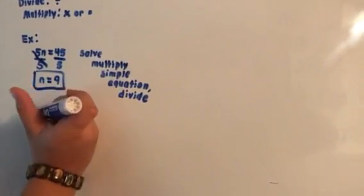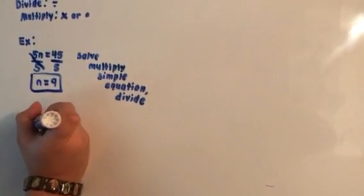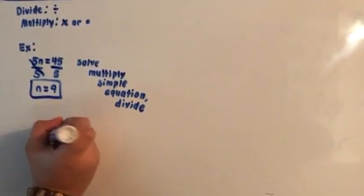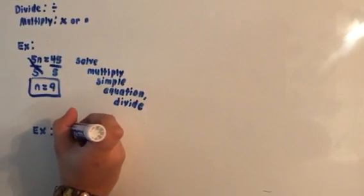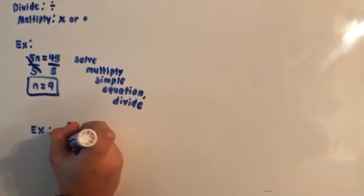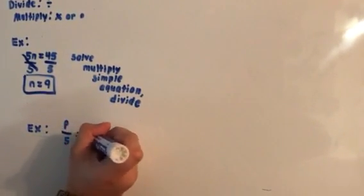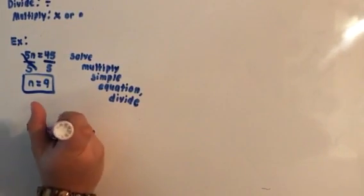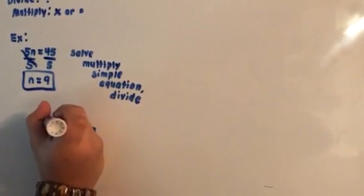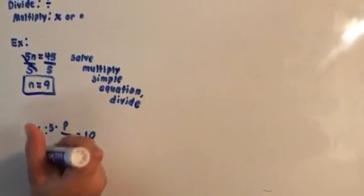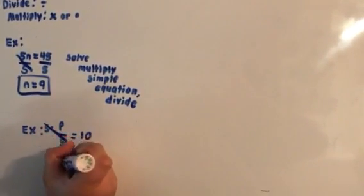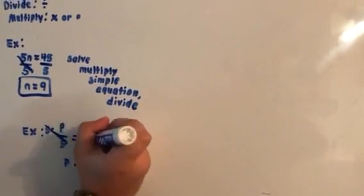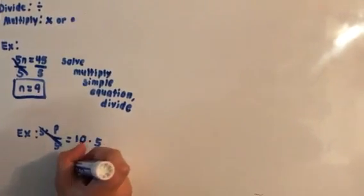So now let's do a dividing example. So what you do is you multiply P times 5, and that cancels out, and that turns into a P, and then you multiply 5 on each side, and that'll be 50.